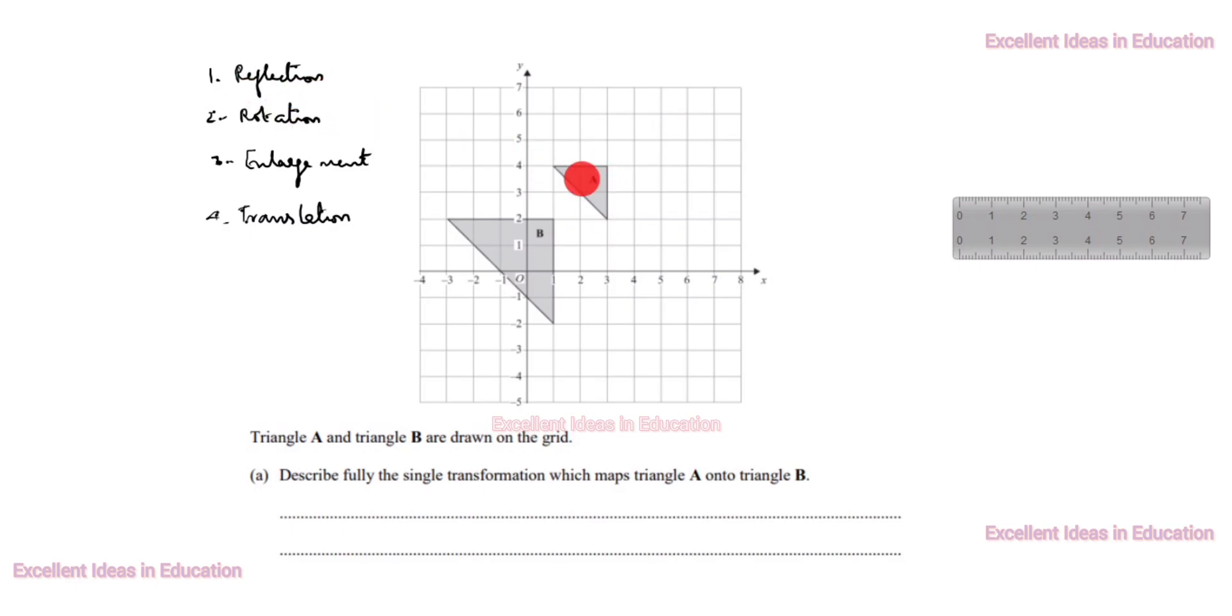Rotation means the image should be the same but in the 90 degree clockwise or anticlockwise direction. Enlargement means this is smallest triangle, this is biggest triangle. So, enlargement only comes in this case. What we need to write here: enlargement.